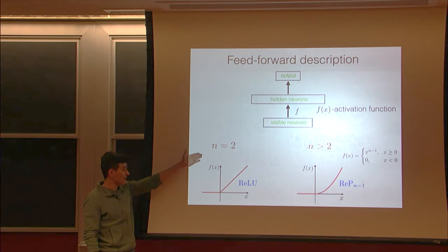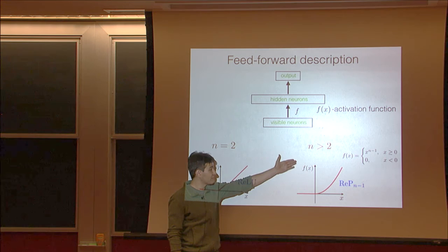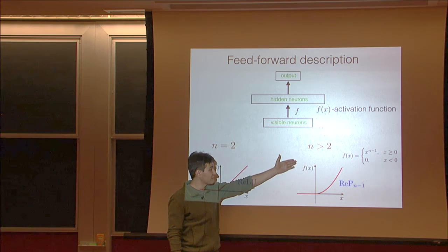Thus, the standard Hopfield net with n equals 2 corresponds to a rectified linear unit. The dense associative memory with n greater than 2 corresponds to activation functions which grow faster than linearly at large inputs.